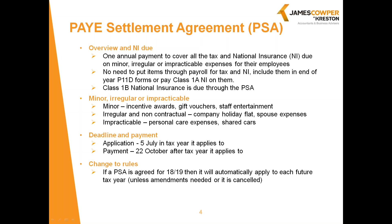The company would be able to claim corporation tax relief for the tax and National Insurance, just as it would for any other form of employee remuneration. The tax and National Insurance calculation has to be submitted to HMRC by 31st July following the end of the tax year, and then you make the payment to HMRC by 19th October, or the 22nd if you pay electronically. The payment shouldn't be made as part of your normal PAYE remittance for that month.